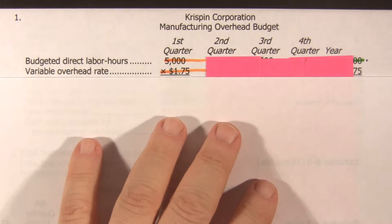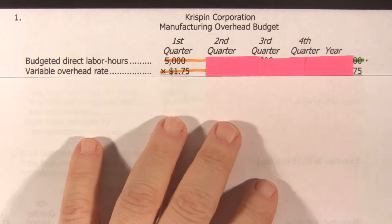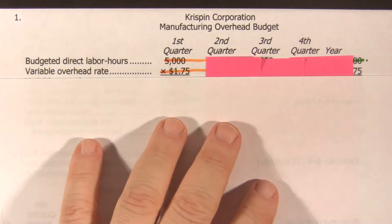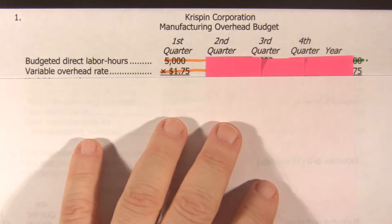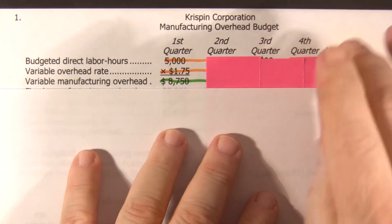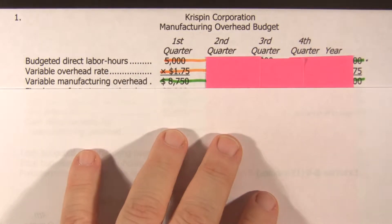We're told for the first quarter we're going to have $5,000 of direct labor hours, and that is our overhead driver. We believe that our variable overhead rate, based on last year's assumptions — that's where that number came from, given to us in the text — is $1.75. So our variable manufacturing overhead for the first quarter is $8,750.